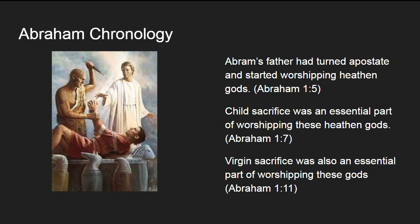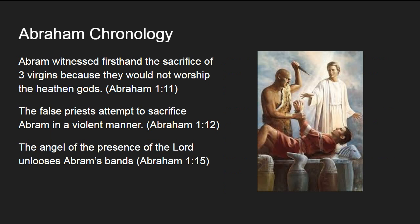Abraham's father was an apostate who had started worshiping heathen gods. In the land where they lived, child sacrifice and virgin sacrifice were essential parts of worshiping those heathen gods. Abram witnessed firsthand the sacrifice of three virgins because they refused to bow down and worship the heathen gods. Abram himself was taken violently, and the false priests attempted to sacrifice him in a similar manner. But just as he was about to be sacrificed, the angel of the presence of the Lord unloosed his bands, and he was able to escape.